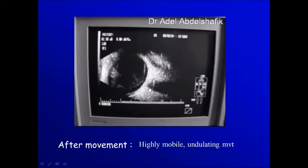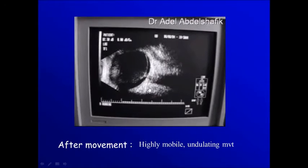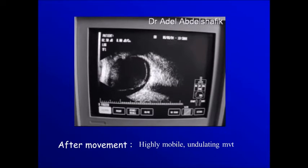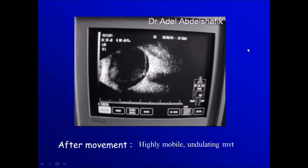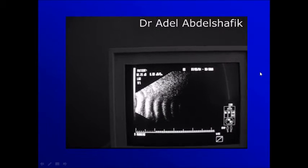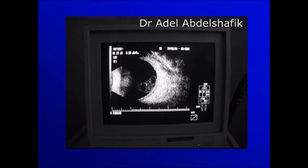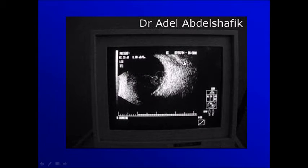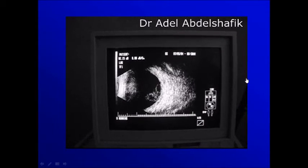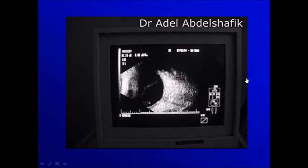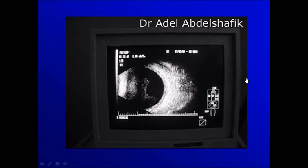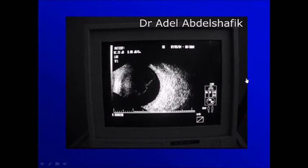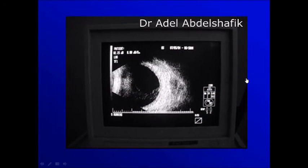You notice the movement — the after-movement of the vitreous. And this is another example. This is the choroid and retina, this is the muscle. You notice the movement, the after-movement of the vitreous.